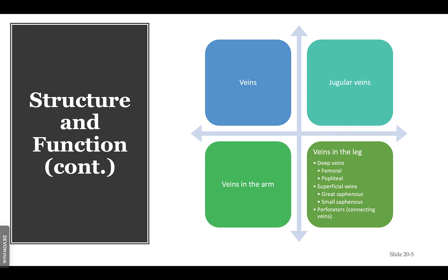The function of the jugular veins: the internal jugular collects blood from the skull, brain, and superficial parts of the face and the majority of the neck. The tributaries of the internal jugular include the inferior petrosal sinus, the facial, lingual, pharyngeal, superior and middle thyroid, and occasionally the occipital vein.